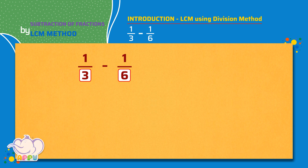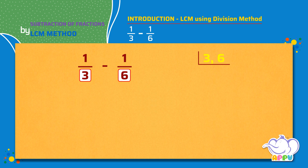Let's make the denominators the same by finding the LCM of the denominators 3 and 6. To find the LCM of 3 and 6 using the division method, we write the denominators separated by a comma. Then we divide these numbers by the least prime number that divides any of these two numbers. Here we start with 2.